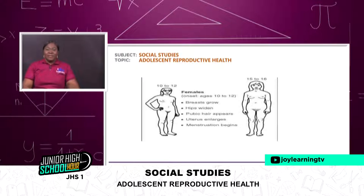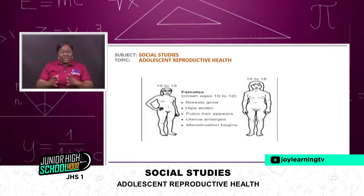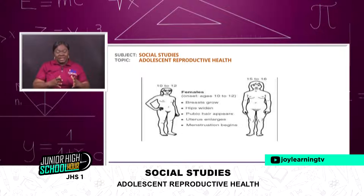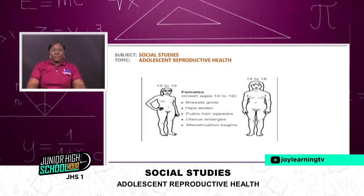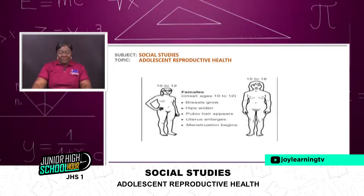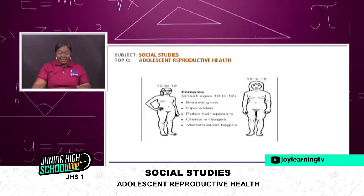There's another picture on your screen which also depicts the transition of a female adolescent from the age of 10 years to 19 years. You can see that the female onset starts from 10 to 12 years. You can see breast grows, hip widens, pubic hair appears, uterus enlarges, and then menstruation begins.